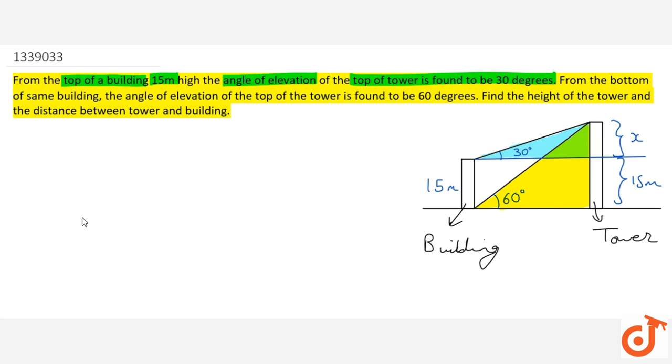From the bottom of the same building, angle of elevation to the top of the tower is 60 degrees. We have made this also. Find the height of the tower and distance between tower and building.